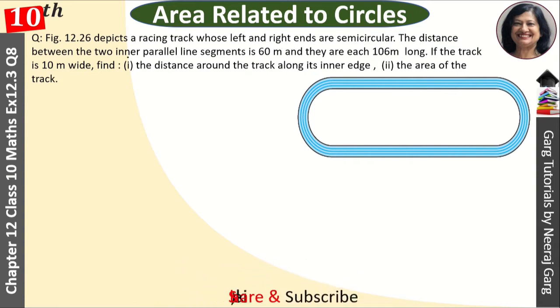The distance between two inner parallel line segments is 60 meters and they are each 106 meters long. If the track is 10 meters wide, find the distance around the track along its inner edge and the area of the track.